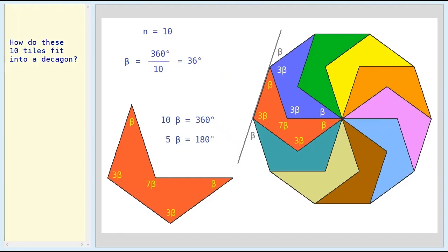So why did those 10 tiles fit together to make a decagon? This angle here is the exterior angle of this polygon. And because there are 10 sides, 10 exterior angles as you go around add up to 360 degrees — so 360 divided by 10 gives us our beta. So every exterior angle is beta. This angle is beta, this angle is 3 beta, so beta plus 3 beta plus beta equals 5 beta, which is 180 degrees — that's a straight line.